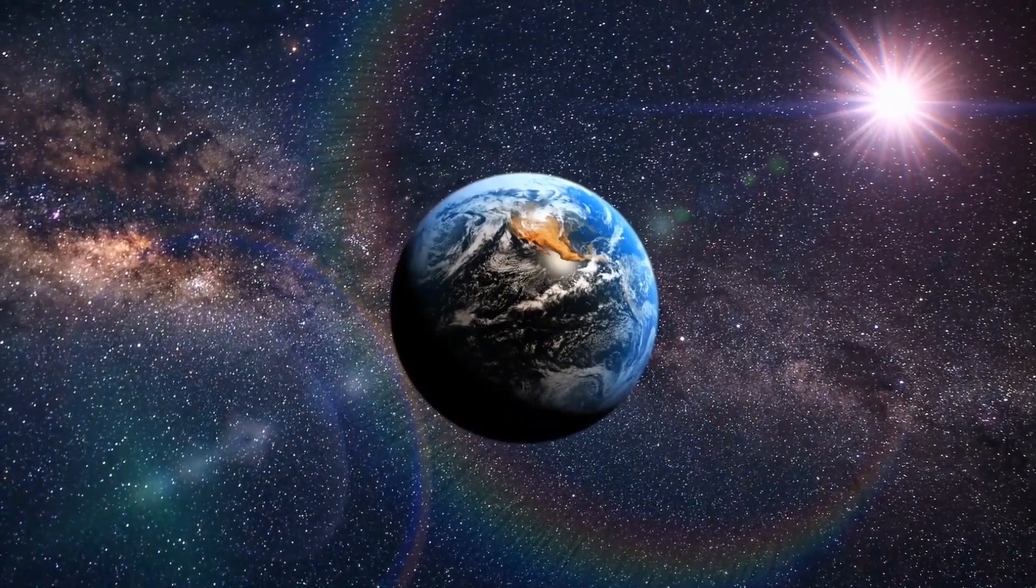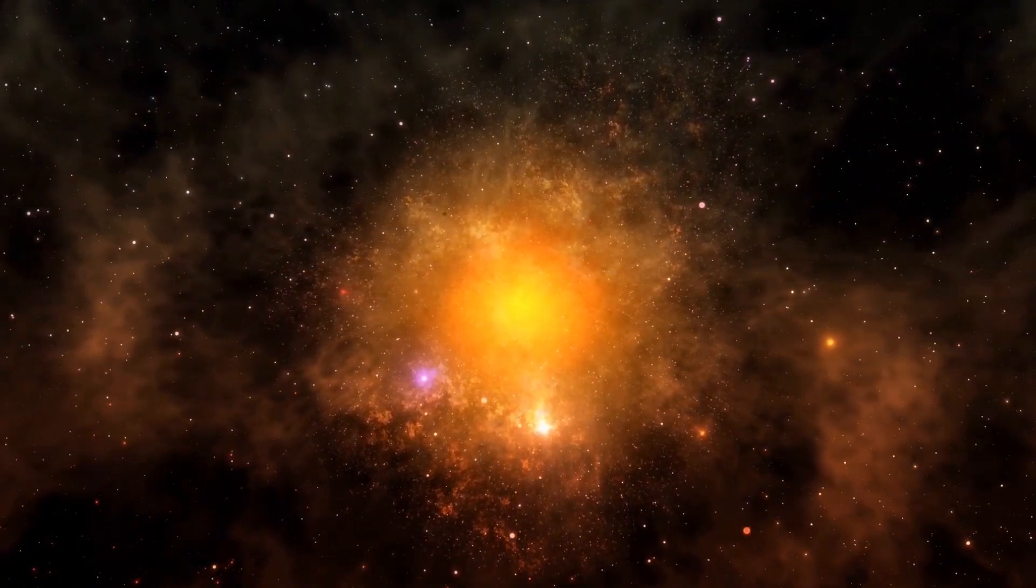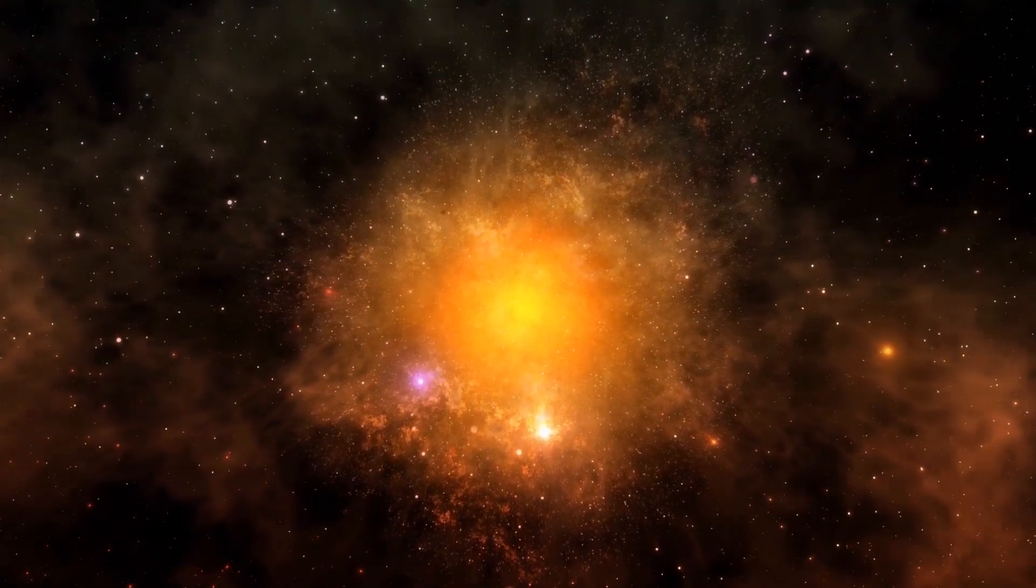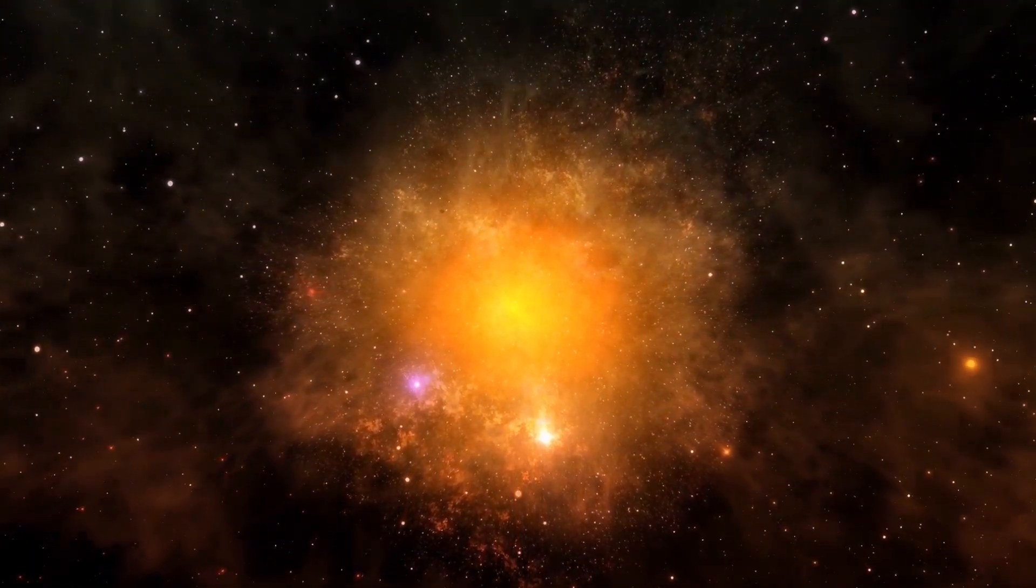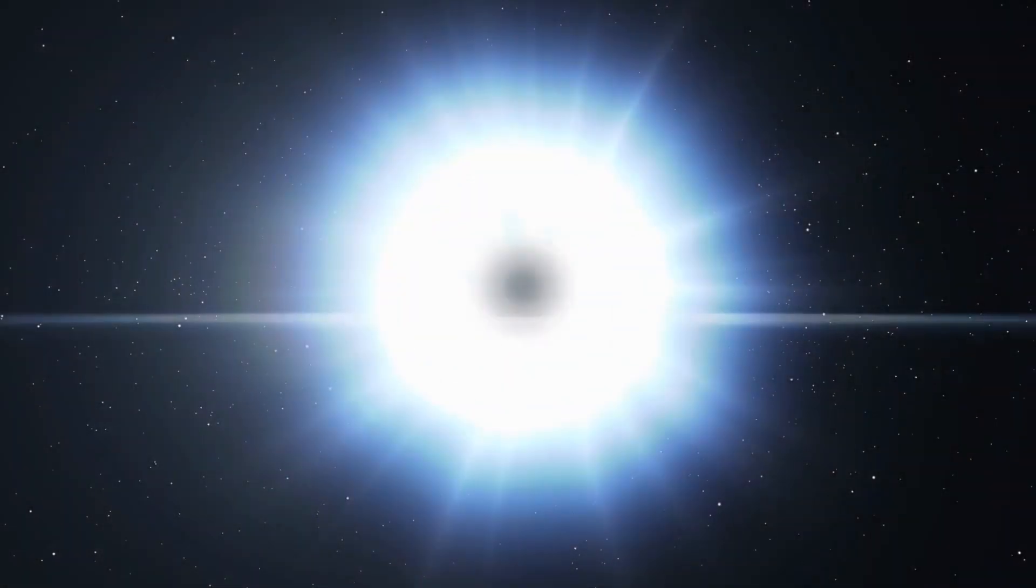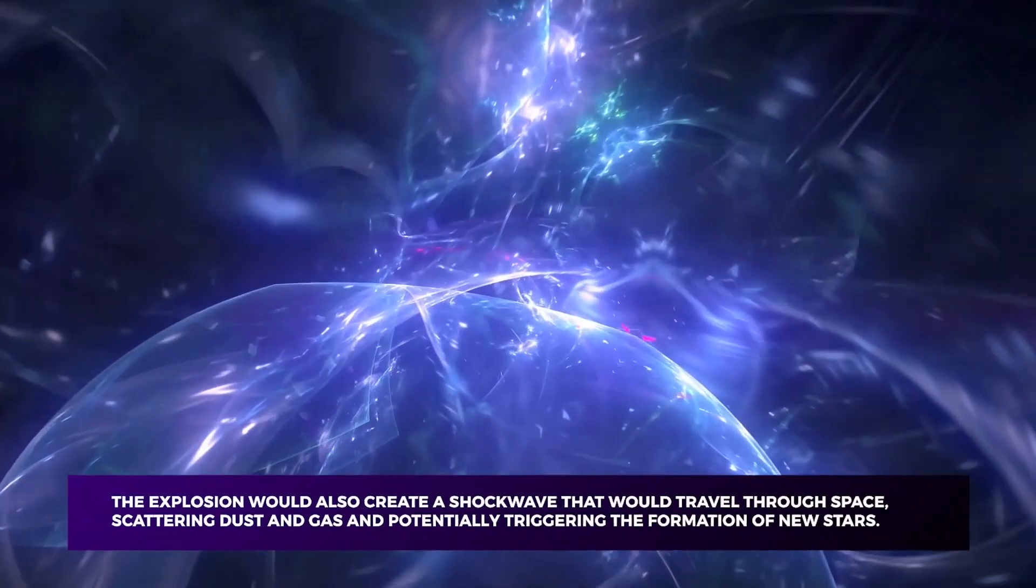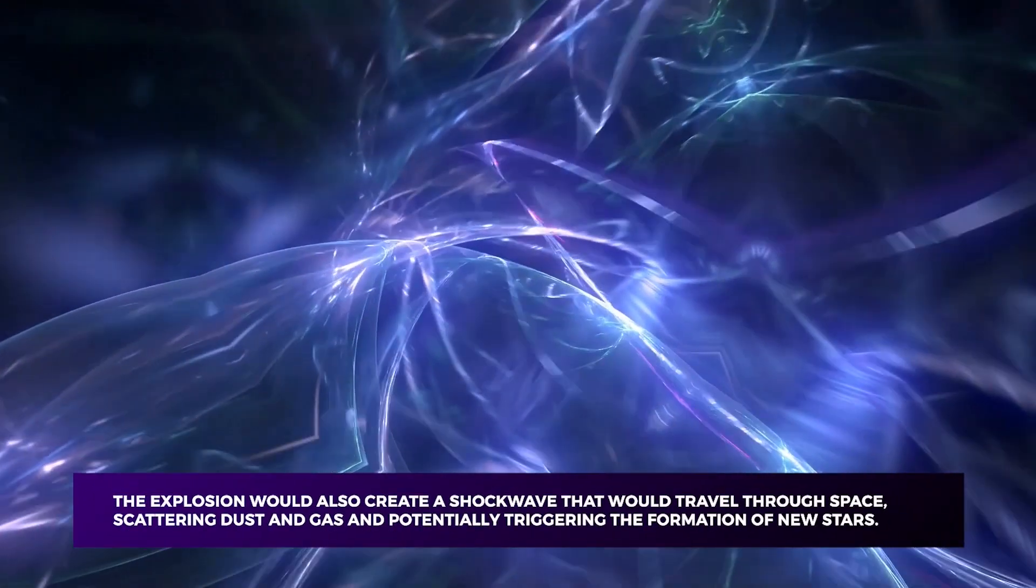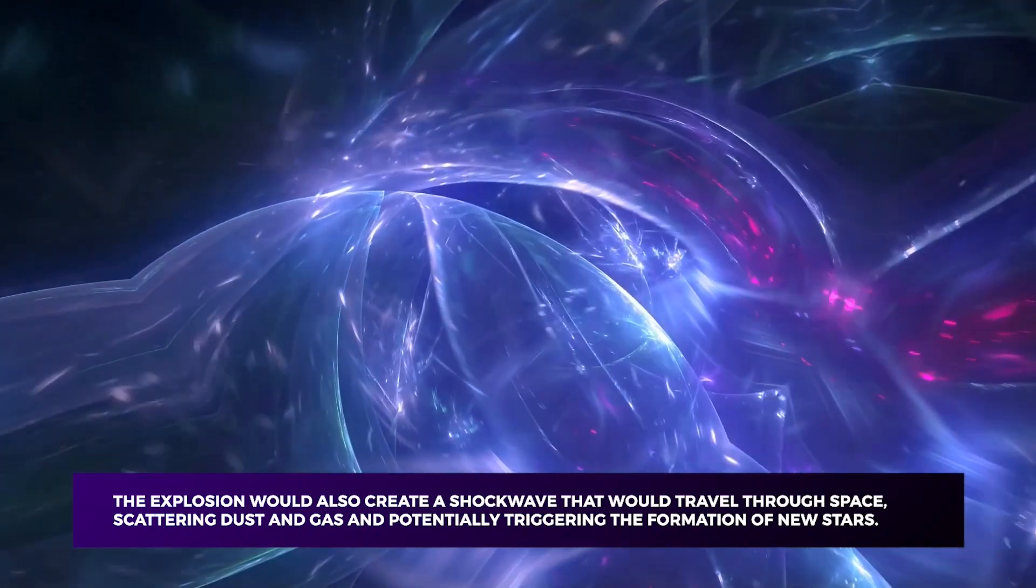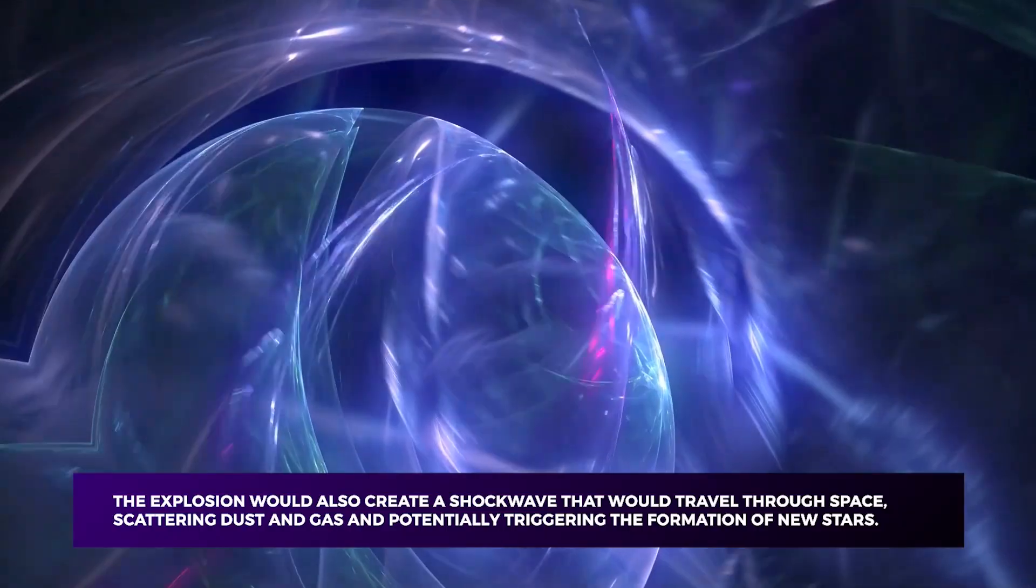The answer depends on how close it is to us. At a distance of 640 light years, Betelgeuse is far enough away that the effects of a supernova would be minimal. However, it would still be an incredible sight to behold. Betelgeuse is known to outshine the full moon and become one of the brightest objects in the night sky. The explosion would also create a shockwave that would travel through space, scattering dust and gas and, potentially, triggering the formation of new stars.